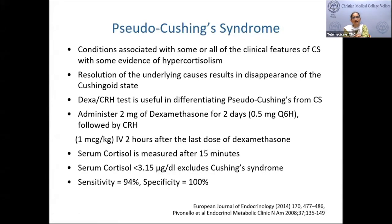For pseudo-Cushing's syndrome, where cortisol is mildly elevated due to an underlying cause and normalizes once treated, the ideal test is the dexamethasone-CRH test. Due to non-availability of CRH in India, the low-dose dexamethasone suppression test — 0.5 mg six-hourly for two days — is commonly used, with cortisol measured on the third day.